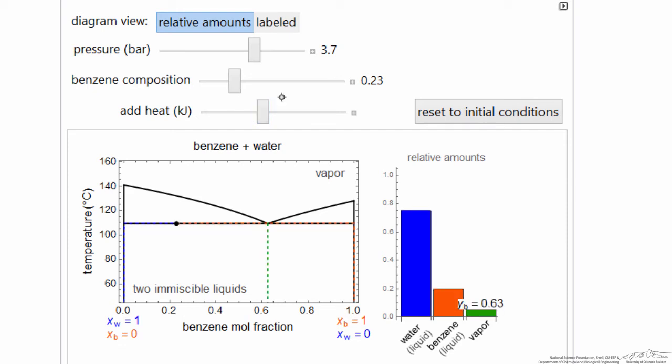I'm going to enter the three phase region. So now you'll notice on the right side, I have vapor, a small amount of vapor present. Vapor has both components, and the composition is indicated by this dashed line. And so we have two liquids and a vapor in equilibrium.